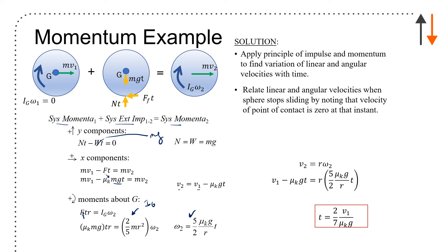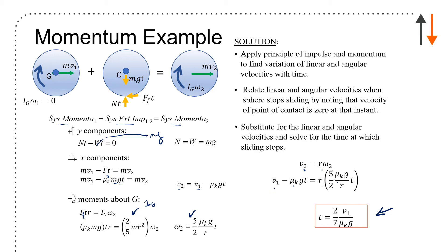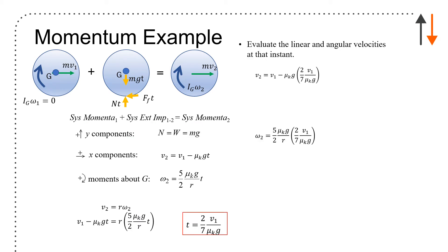Now, if I want to relate the linear and angular velocity when it stops slipping, the velocity at the point of contact must be zero, so v2 equals r times omega 2. I have v2 equals v1 minus mu_k times g times t, and that has to equal r times omega 2. Solving, that time t2 is going to be two-sevenths times v1 over mu_k times g. This is a problem with variables, so it's not that complex.